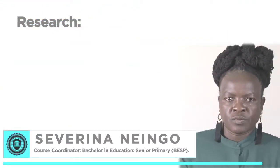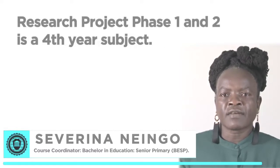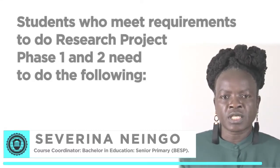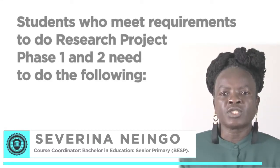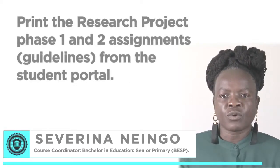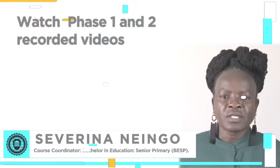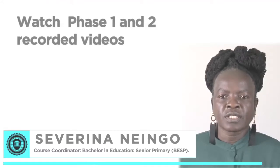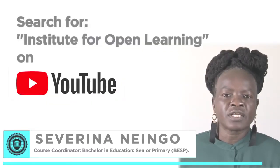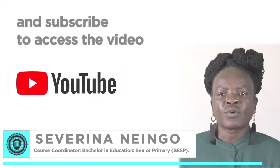Research project phase one and two is a fourth year subject. Students who meet the requirements to do research project phase one and two need to do the following: print the research project phase one and two assignments or guidelines from the student portal, and watch the phase one and two recorded videos on the IOL YouTube channel.